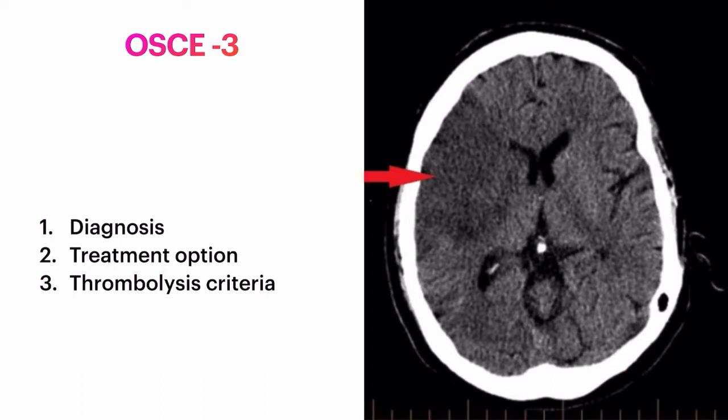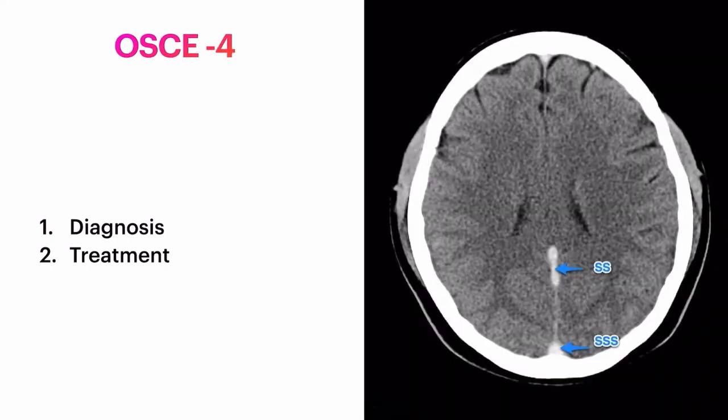Question three: an elderly male came with complaint of weakness of one side of the body. A CT scan image is given to you. Write down the diagnosis, treatment options, thrombolysis criteria, and the two thrombolytic agents which are approved for thrombolysis.